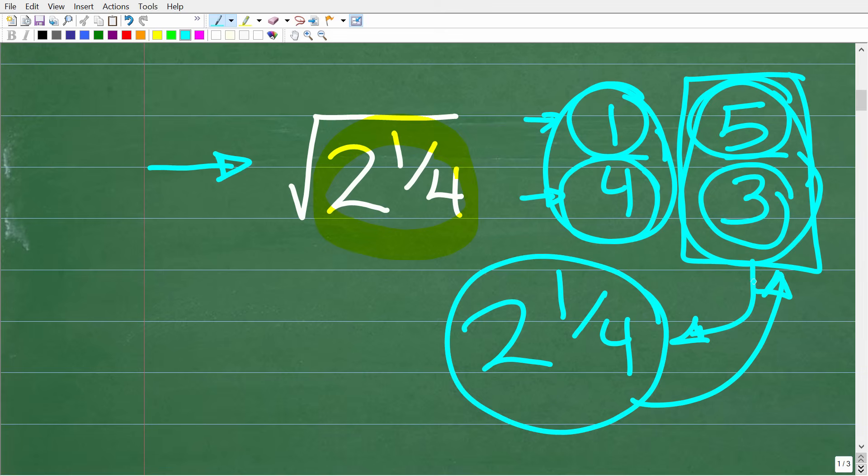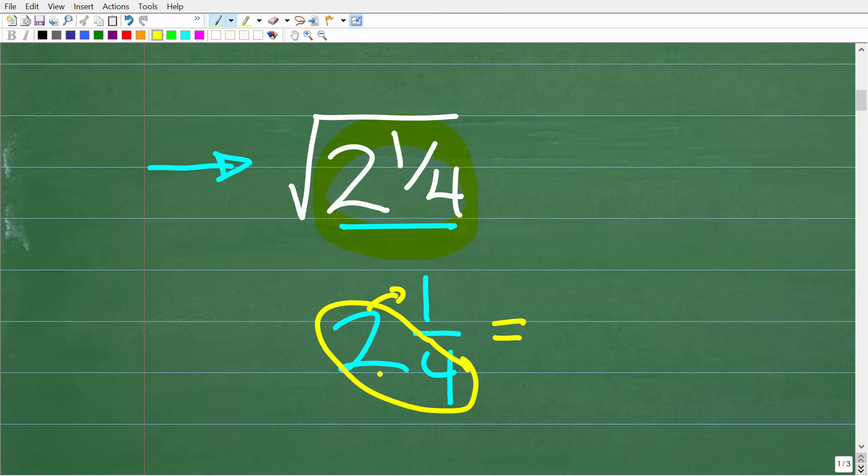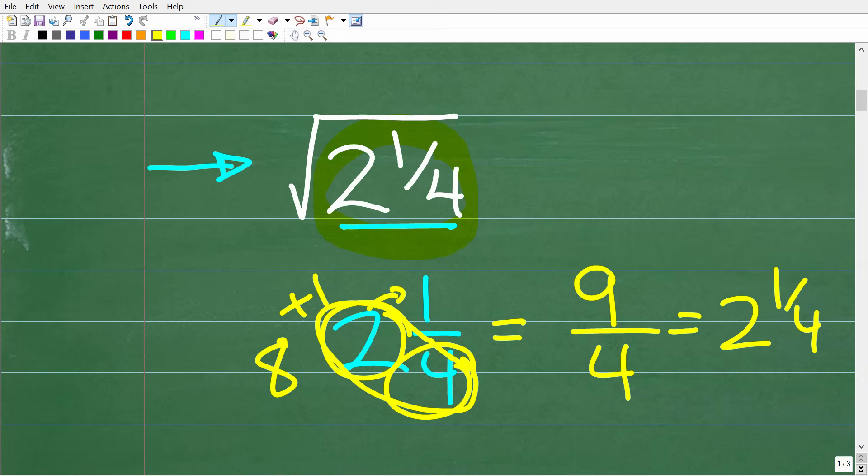So that is really going to be the key to solving this problem. So how can we write 2 and 1/4 as an improper fraction? All you have to do is take your 2 and 1/4 and take this 4 and multiply it by 2. So 4 times 2 is 8. And then we add 1. So to change 2 and 1/4, this mixed number fraction, into an improper fraction, we take 4, multiply it by 2, that's 8, and then we're going to add 1. So we have 9. And then we're going to put that over this 4 right here. So 2 and 1/4, this mixed number fraction, is equivalent to the improper fraction 9/4.